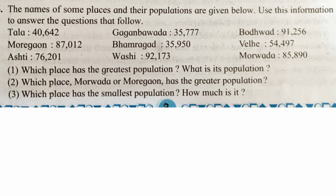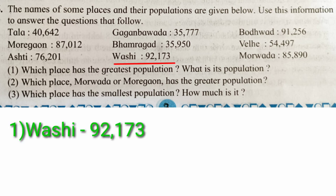The last question: the names of some places and their populations are given. Use this information to answer the questions. The first question is: which place has the greatest population and what is it? Looking at the information, Washi has the greatest population — ninety-two thousand one hundred and seventy-three.